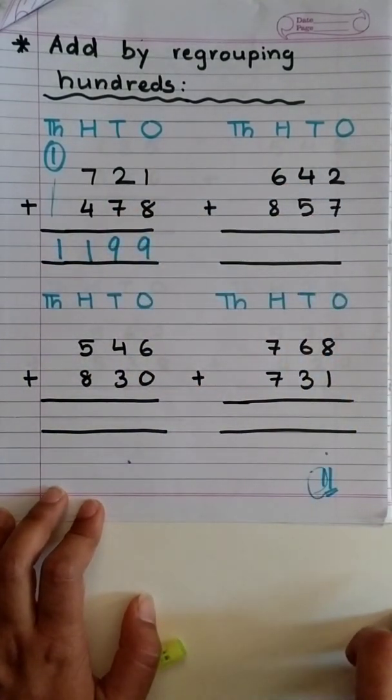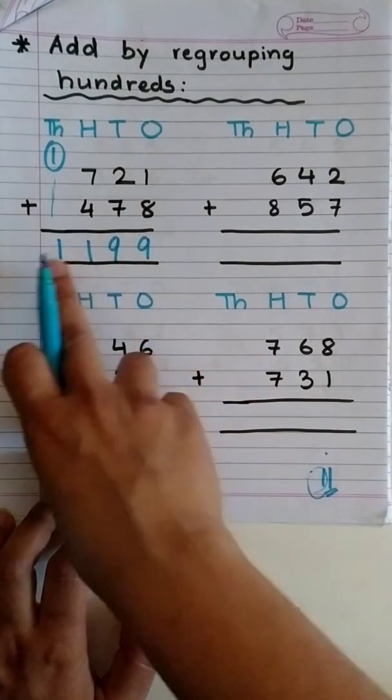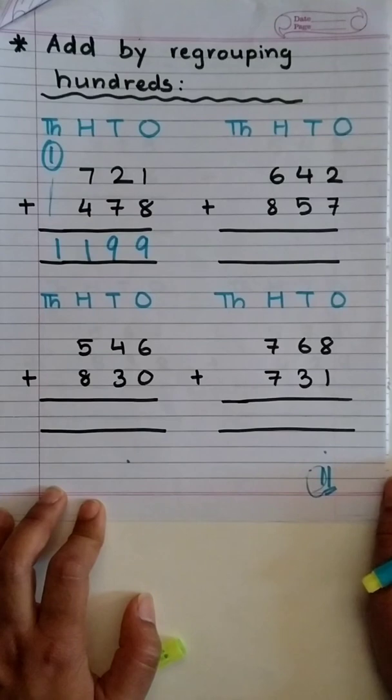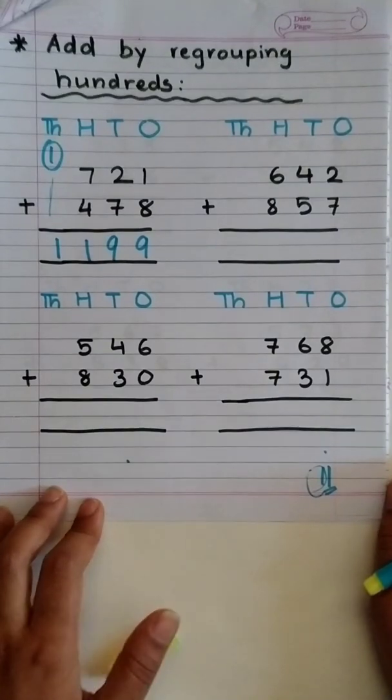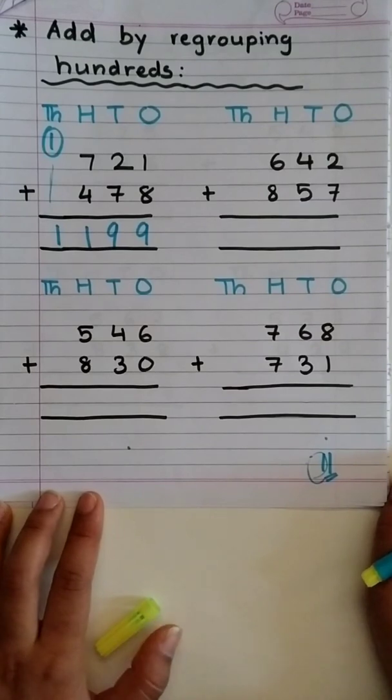So, when we regroup the digits at hundreds place, we'll get 4 digits answer. Okay? Well, that's easy for you, isn't it? Let's try one more.